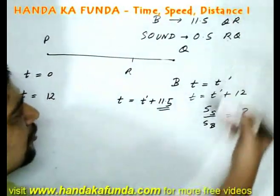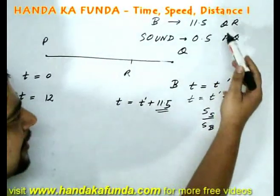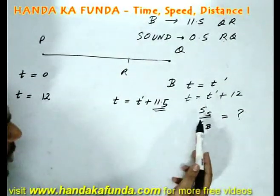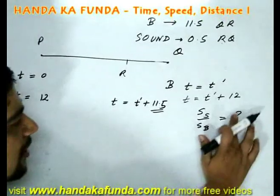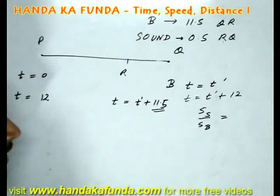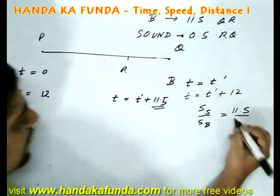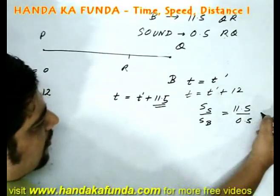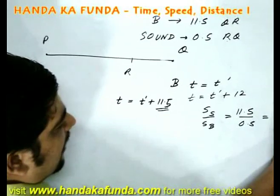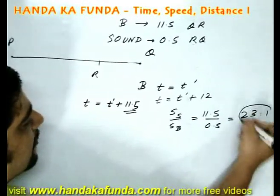As you can see R-Q is equal to Q-R. The distance is constant. So, the ratio of the speed which we want to find out will be inverse of the ratios of the times taken. B takes 11.5 minutes. Sound takes 0.5 minutes. So, the required ratio is 11.5 by 0.5 or 23 is to 1.